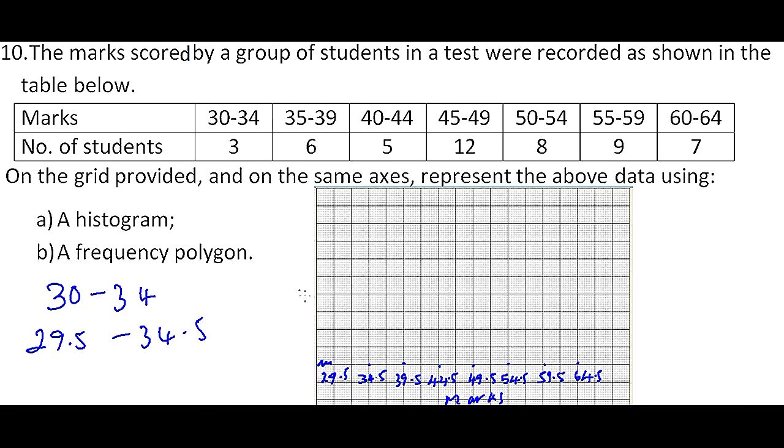Then our vertical scale we will put the frequency. The highest is 12, so we can say this is 2, this is 4, this is 6, this is 8, this is 10, and then we have 12 and we have 14.